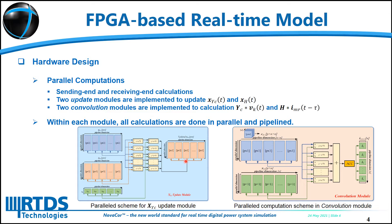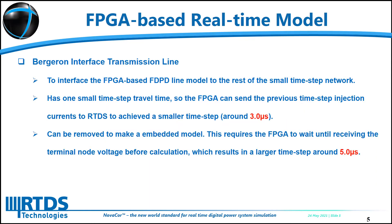The two state variables, X_H and X_YC, are also updated in parallel as shown in the left figure. Once X_YC and X_H are updated, two convolution modules are executed in parallel to carry out the two convolutions within each module. All calculations are also done in parallel and pipelined. To interface the FPGA-based model to the rest of the small timestep network, a one-small-timestep travel time version line is connected to the terminal of the transmission line model to provide a stable interface.